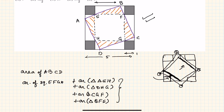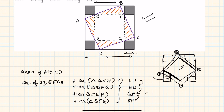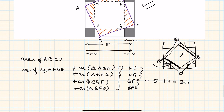Due to symmetry, all four triangles are equal in area. The base of all these triangles is the same — for example, HE is the base of triangle AEH, HG for DHG, GF for CGF, and EF for BFE. All these bases are equal because they are five minus one minus one, which is three inches.